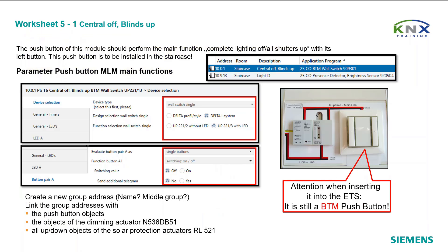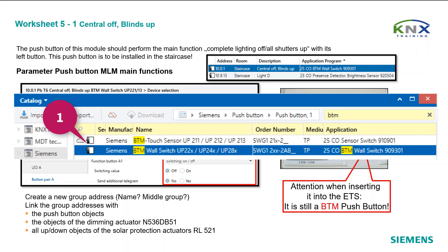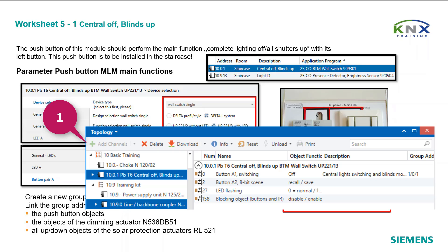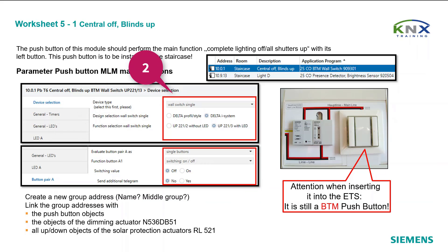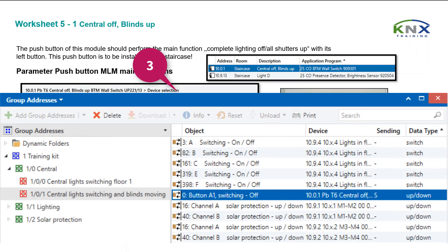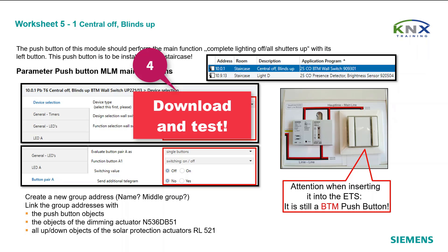Worksheet 5-1: Central off, lines up. The push button of this module should perform the main function — complete lighting off and all shutters up — with its left button. This push button is to be installed in the staircase. Follow the workflow: 1. Look up the new device in the catalog and insert it into your project, making sure the push button has a main line address like 10.0.1. 2. Do the parameters next. 3. Create the new group address and link it to all required objects. 4. Download and test all affected devices.